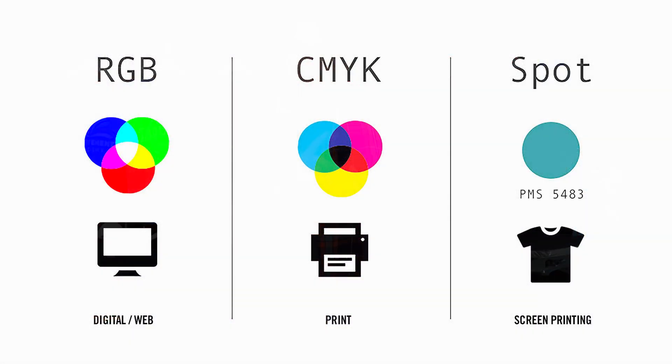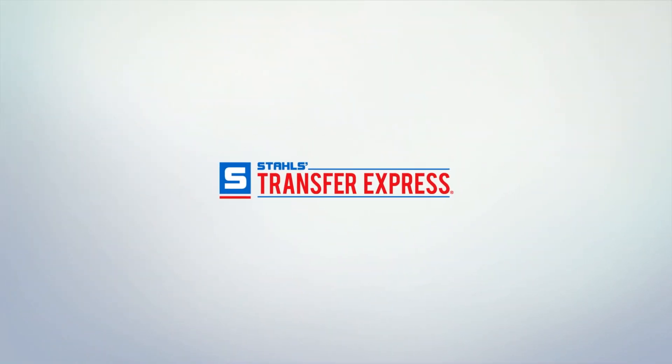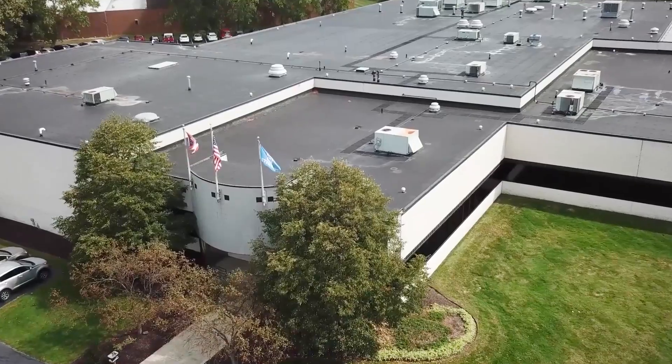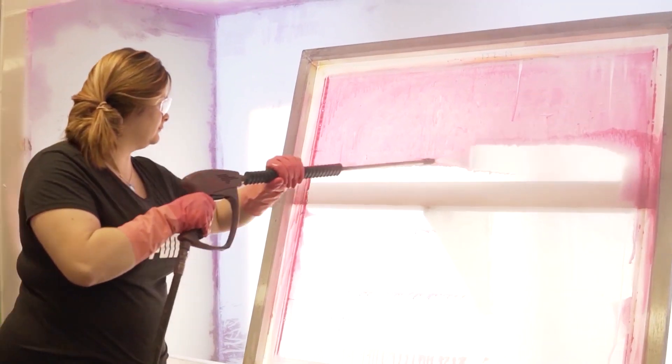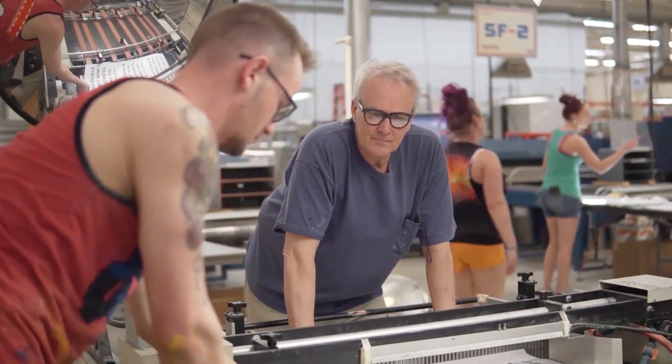Hey friends, Dave here with Transfer Express. Today we are covering color models and modes — we're going to learn the differences between RGB, CMYK, and spot colors, and how those modes relate to t-shirt design and printing. Transfer Express is the leading supplier of custom screen printed and digital heat transfers for the apparel decorating industry, with two facilities in Ohio and Arizona.